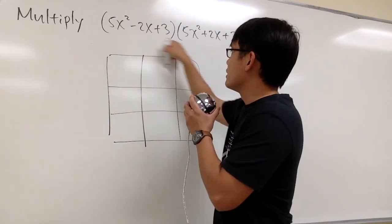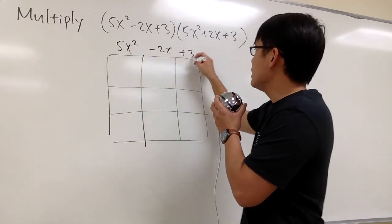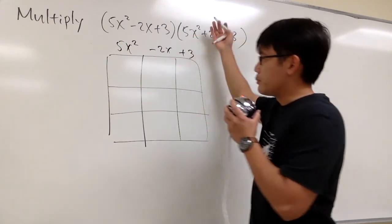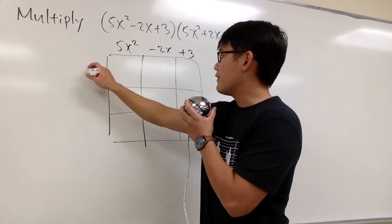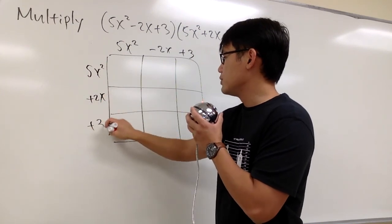On the top, I will put down 5x² - 2x + 3, and then I'll put down the second parenthesis right here on the side. We have 5x² + 2x + 3.